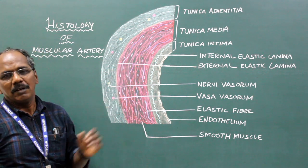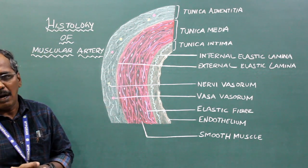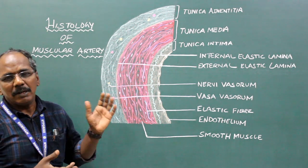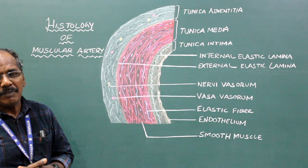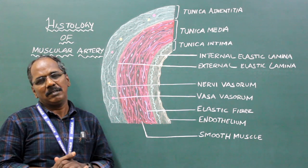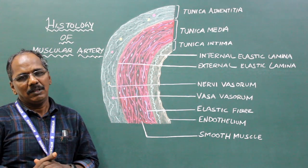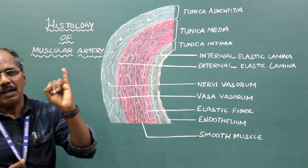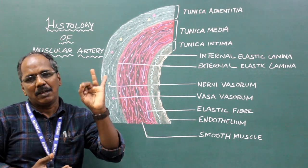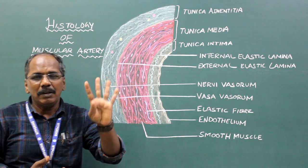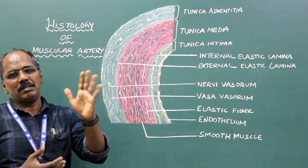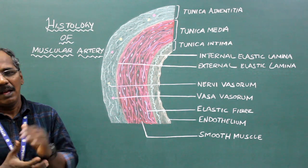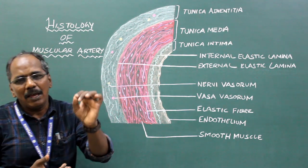Histology of Medium-Sized Artery or Muscular Artery. Histologically, there are five main blood vessels. They are artery, arteriole, capillaries, venules, and veins. All these blood vessels have basically the same structures.